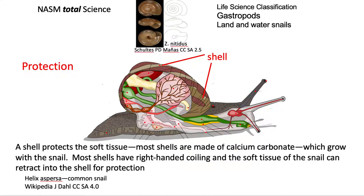The outer shell is protection. Most of them are made of calcium carbonate and they grow as the snail grows, and most have right-handed coiling. All the soft tissue of the snail can be retracted into the shell for protection.